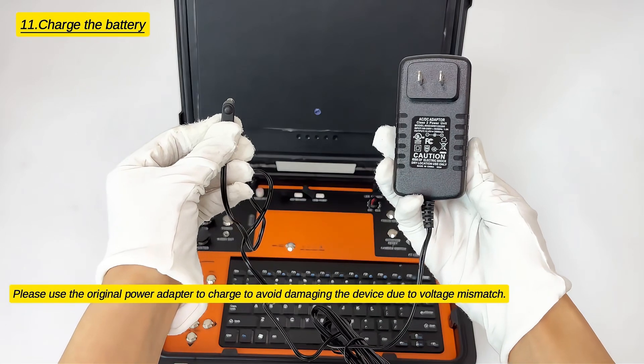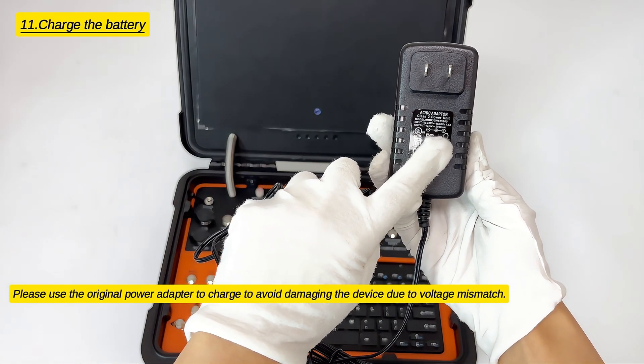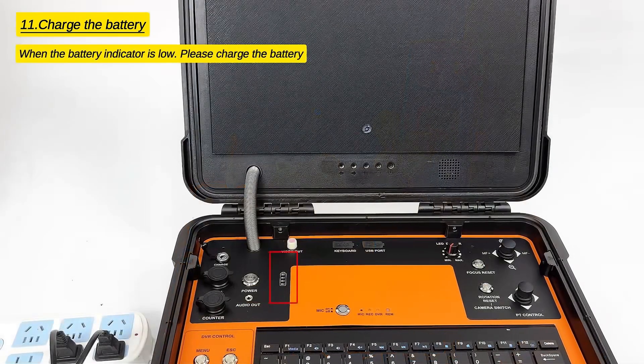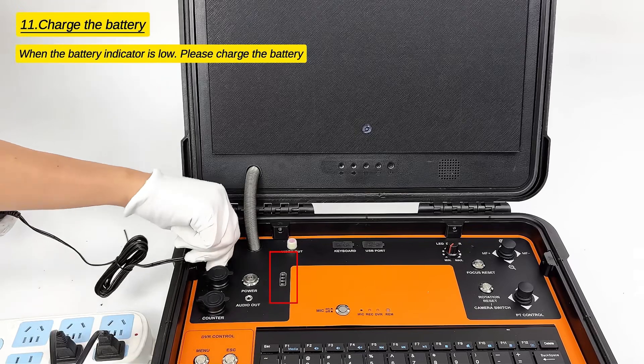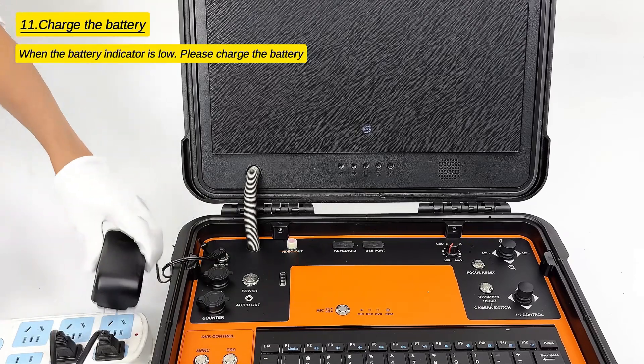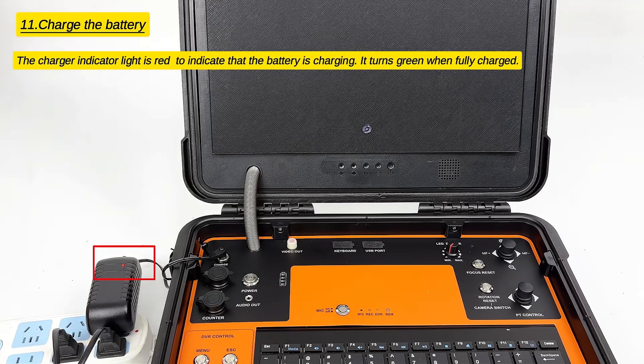Please use the original power adapter to charge to avoid damaging the device due to voltage mismatch. When the battery indicator is low, please charge the battery. The charger indicator light is red to indicate that the battery is charging. It turns green when fully charged.